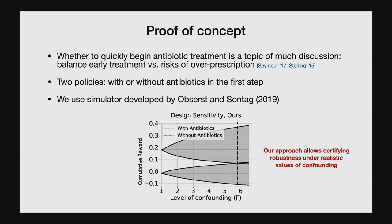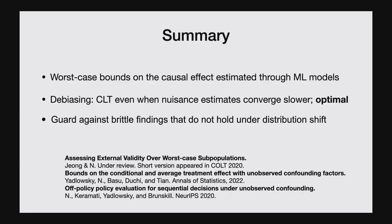In sum, these worst-case approaches have the potential to guard against brittle findings that don't hold under distribution shift. They're very useful tools for contextualizing results in some qualitative way, but they're not magic bullets. I like to think about this as an intelligent middle ground: on one end, lying to yourself and assuming your study population is representative with no unobserved confounders; on the other end, throwing up your hands and ignoring all the data. I believe a lot of these worst-case procedures have the potential to foster a culture in which we can critically reason about the validity of findings, and there's certainly a lot of work to be done in this space.